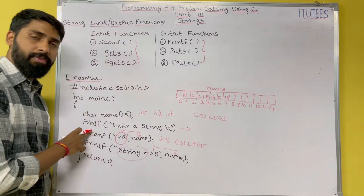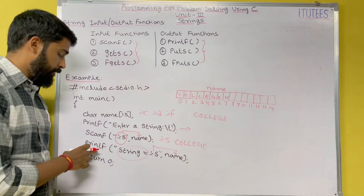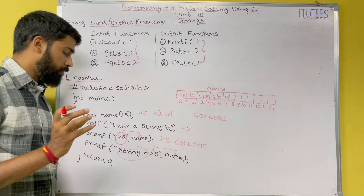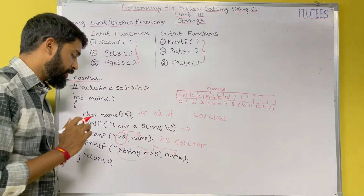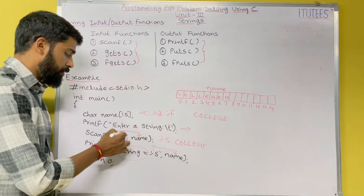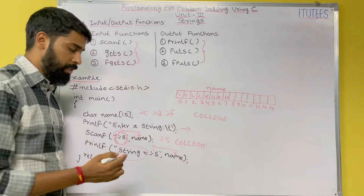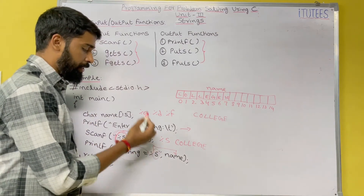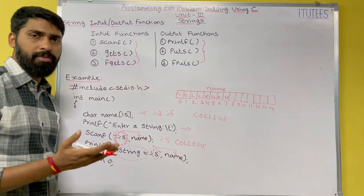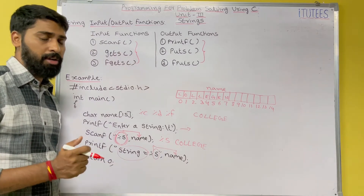So scanf is used to read a string from the keyboard and printf is used to print a string onto the monitor. One important thing to remember: when you read any string from the keyboard, you use %s as a control string, and similarly when you print a string, you also use %s. If it is a character, use %c; if it is a string, use %s.